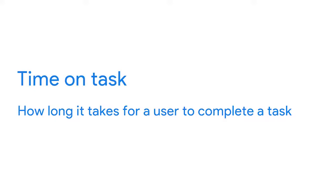First up: time on task. This measures how long it takes for a user to complete a task, which could include filling out forms, making a purchase, or any other user activity. It's generally safe to assume that the less time it takes for users to perform a task, the more effective your UX design is.